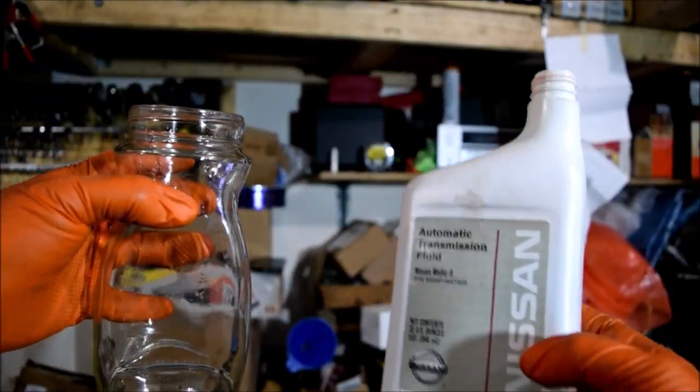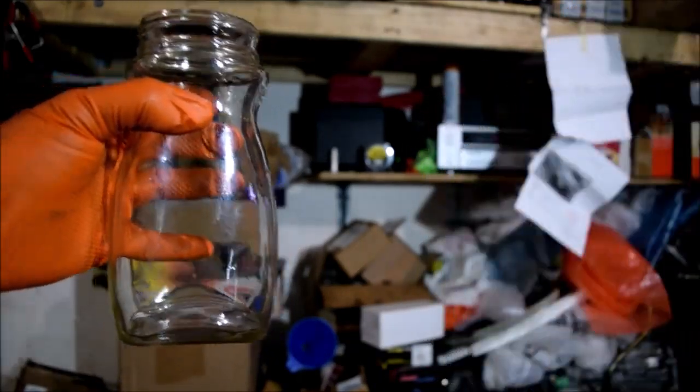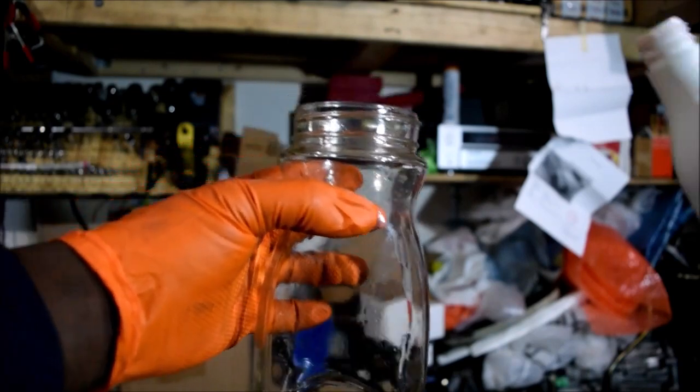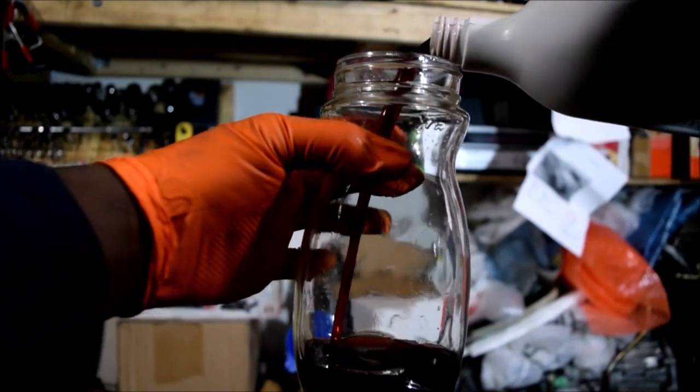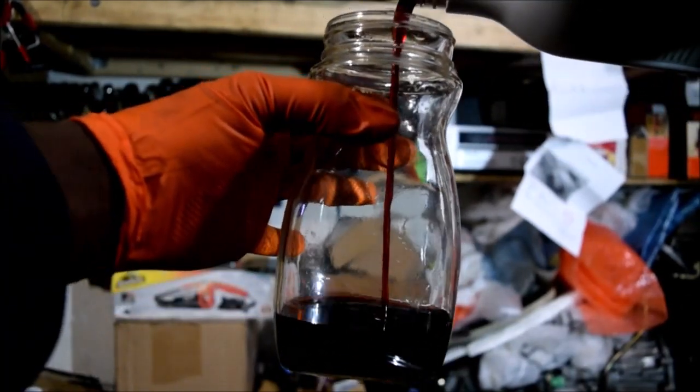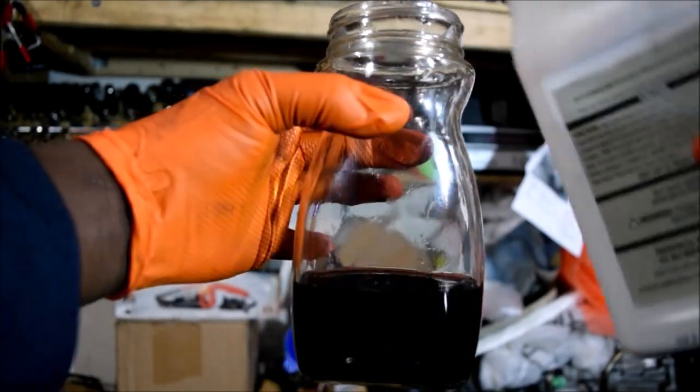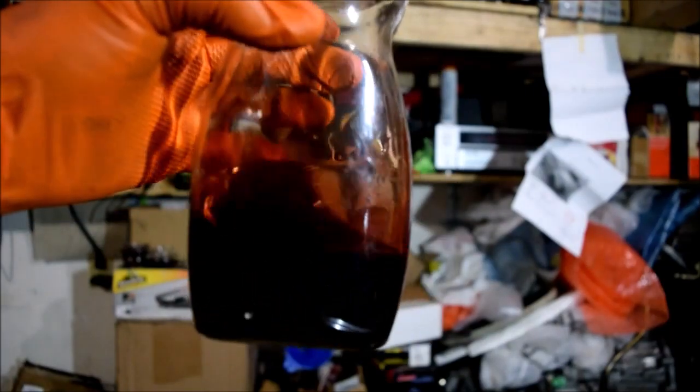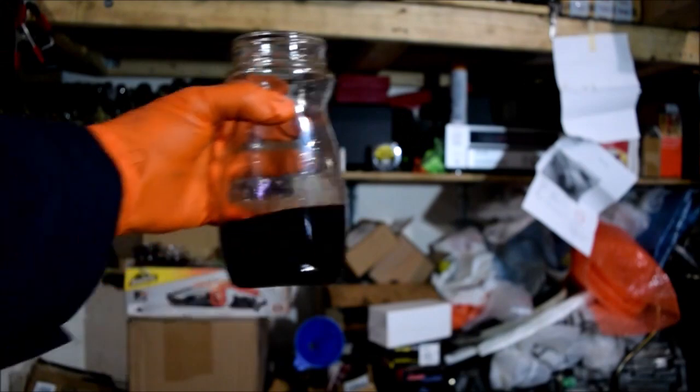Now we have transmission fluid in the other jug over here and we're going to pour the transmission fluid in here to see what it looks like. Normally you expect transmission fluid to be pinkish, maybe brown if it is dirty. There's a little bit of a red tint to this - maybe you need to shake it up a little bit to see. There's your transmission fluid.